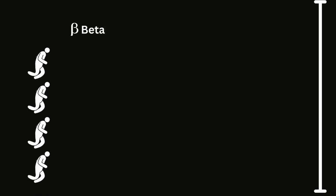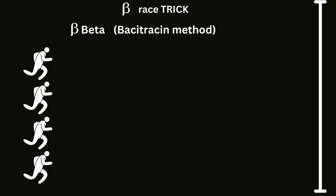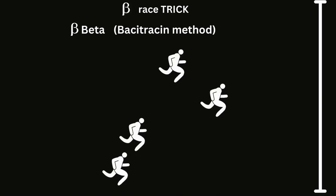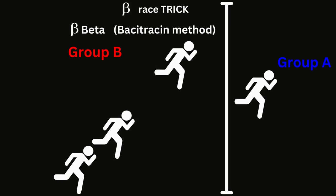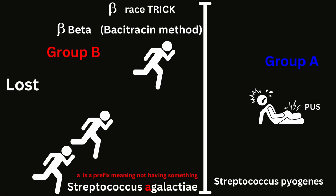Next we have the beta bacteria, who are successful in complete hemolysis. We select these successful bacteria for a race known as the bacitracin contest. Those who win in this contest are allocated group A, while those who lose are allocated group B. Since group A participants won the race, they have pus oozing out of their legs and are called streptococcus pyogenes. While those that belong to group B have lost and hence are called streptococcus agalactiae.